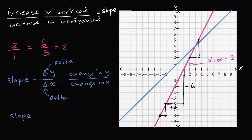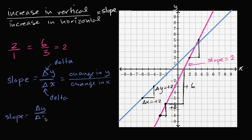Let's start at some point on the blue line. If my delta x equals positive two — I go to the right by two — to get back on the line I have to increase my y by two. So my delta y is also plus two. The slope of the blue line is change in y over change in x, which is two divided by two, equal to one. This tells us that however much we increase in x, we increase that same amount in y — increase one in x, increase one in y, from any point on the line.